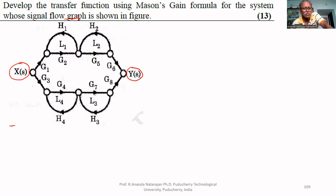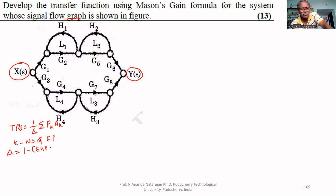Mason's gain formula to find the transfer function is: T(s) = (1/Δ) Σ pk·Δk, where k is the number of forward paths. Delta (Δ) equals 1 minus the sum of gain products of individual loops, plus the sum of gain products of 2 non-touching loops, minus the sum of gain products of 3 non-touching loops, plus etc.